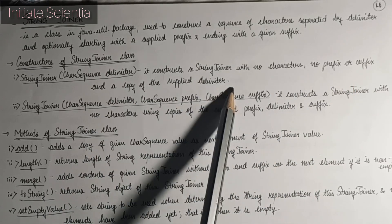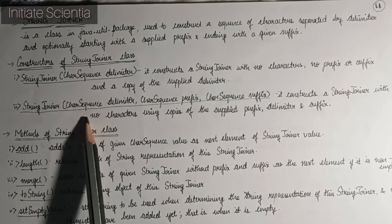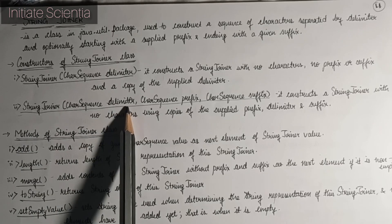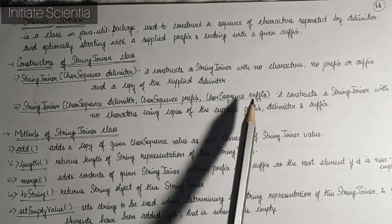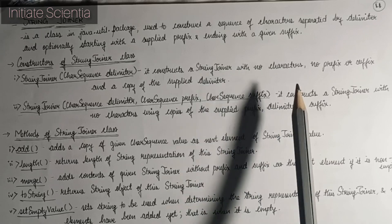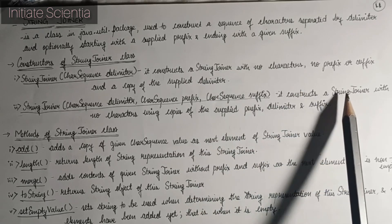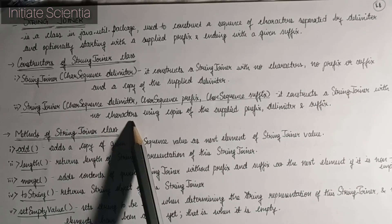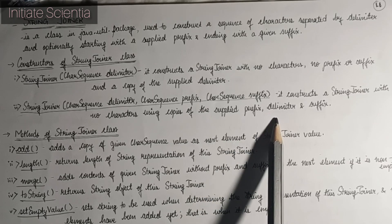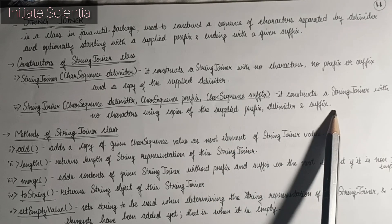Constructor two: StringJoiner(CharSequence delimiter, CharSequence prefix, CharSequence suffix) — these are passed as arguments. It constructs a StringJoiner with no characters, using copies of the supplied prefix, delimiter, and suffix.